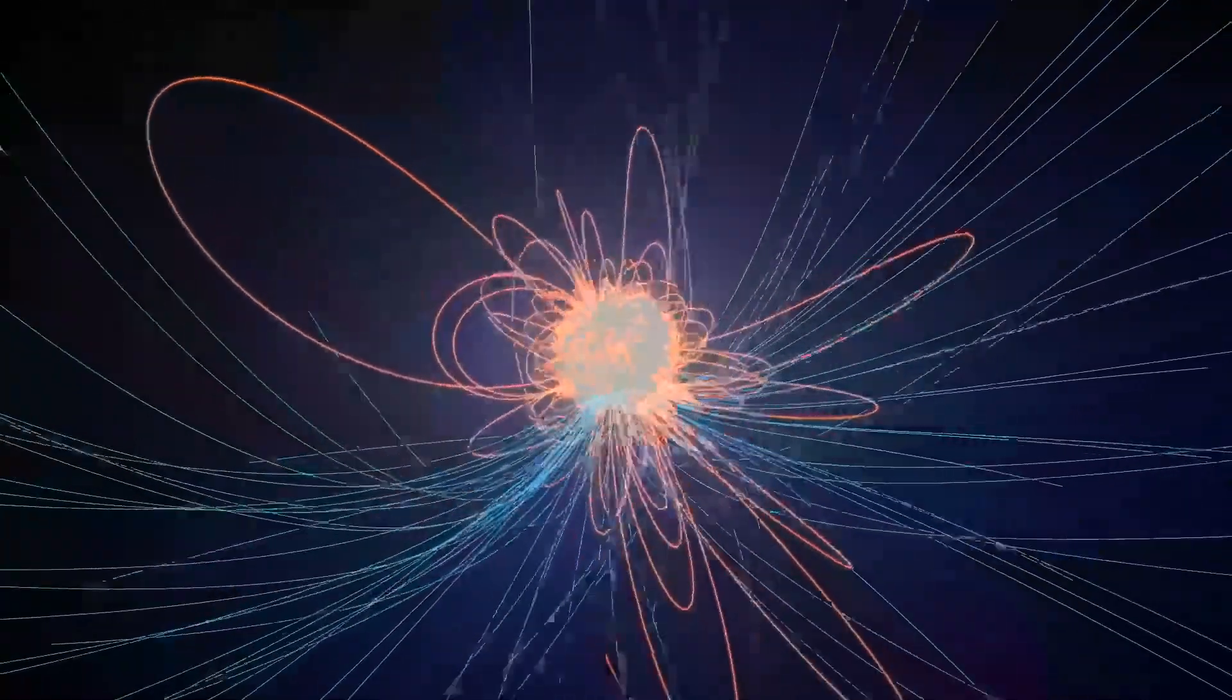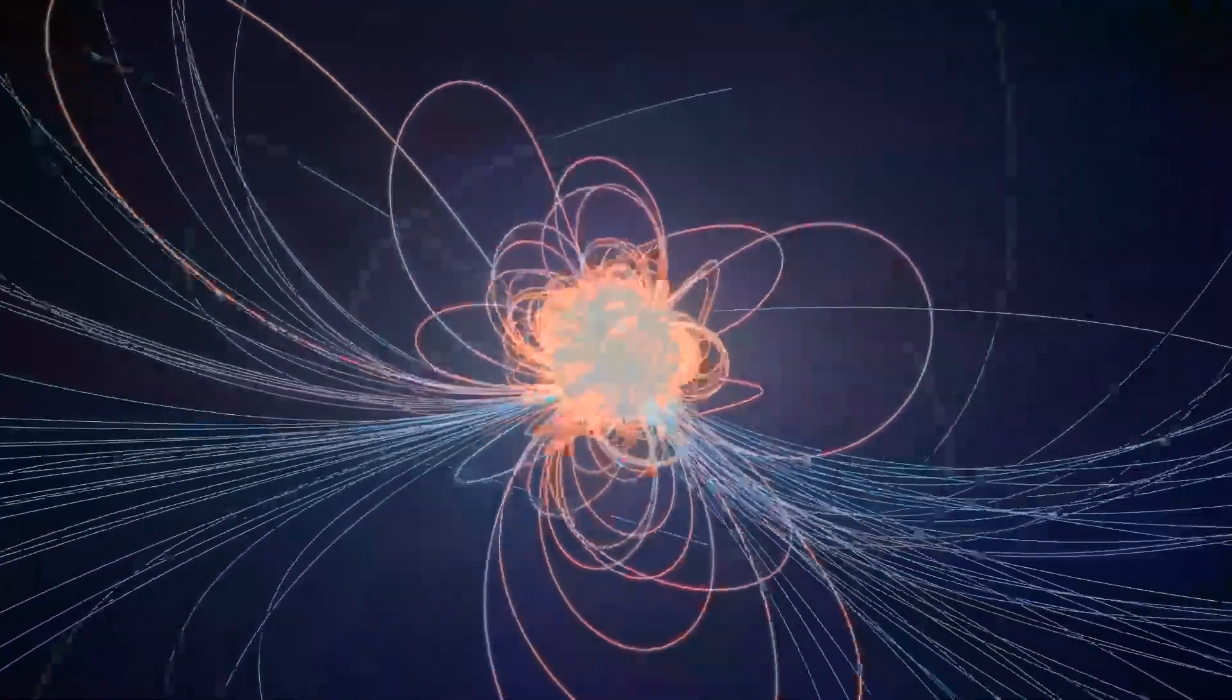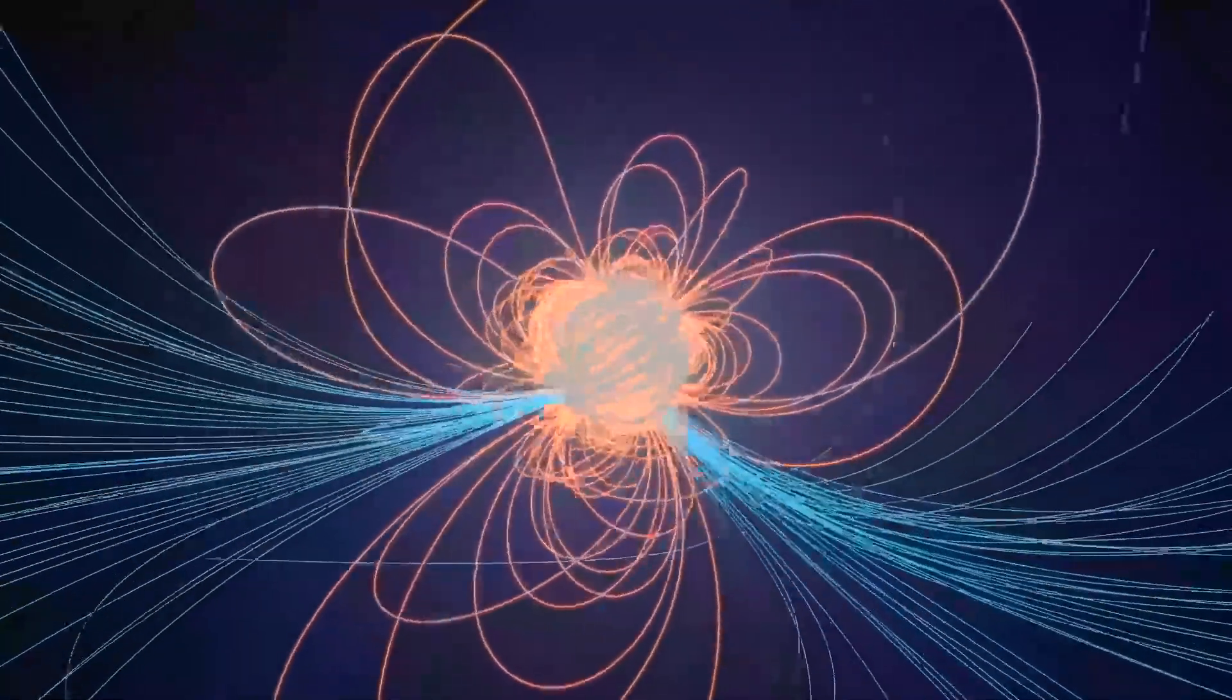Scientists are still trying to determine why J0030's spots take on these shapes and arrangements, but for now it's clear that pulsar magnetic fields are more complex than originally assumed.